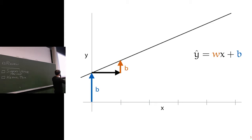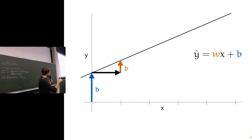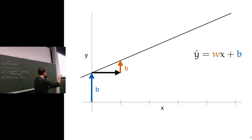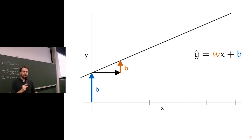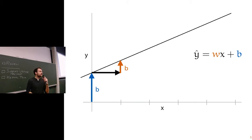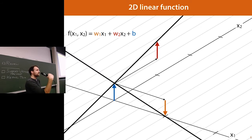Usually we have more than one feature. For instance, with two features we simply assign each feature its own unique slope — w1 and w2, one per feature — and we still have one bias. The slope for w2 means: if I take a step of size one along axis x2, the output increases by w2. Same for x1. In two dimensions, this kind of function defines a plane over the axes, and the b parameter allows you to translate the plane up or down.